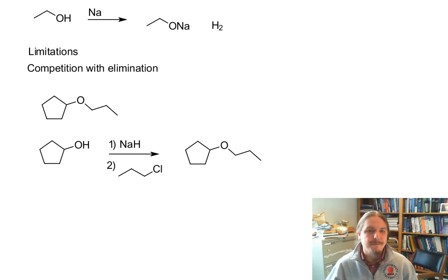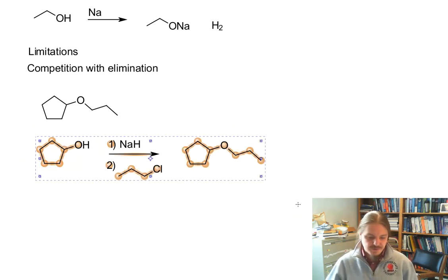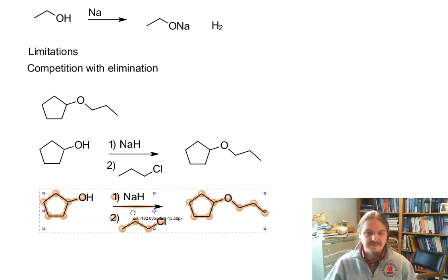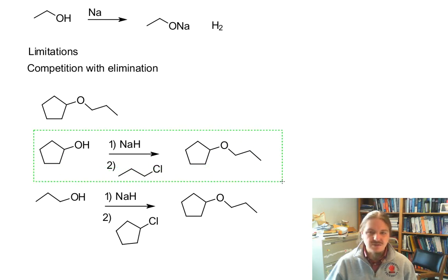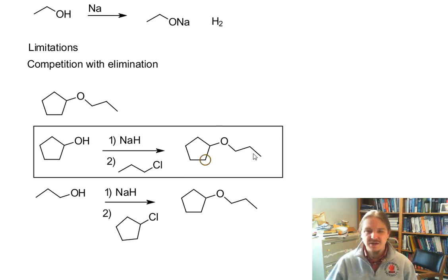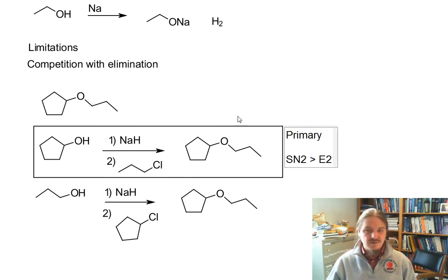Well, now wait a minute. I want to have both of these on the screen. Instead of having propyl chloride, we could have cyclohexyl chloride. Of these two approaches, the one on the top is so much better because we have a primary substrate in this reaction. And with our primary substrate, SN2 is going to win over E2.